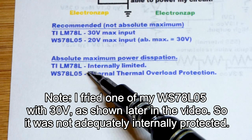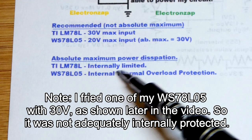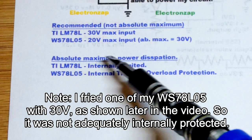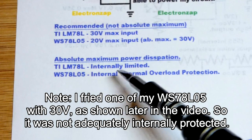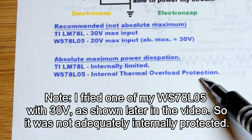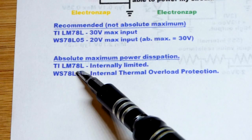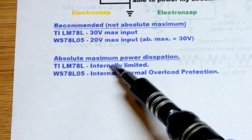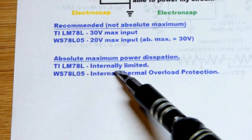But in any case, for the most part, if it says internally limited when it comes to power or internal thermal overload protection, the LM version actually has both of these, depending on where you're looking at the data sheet.